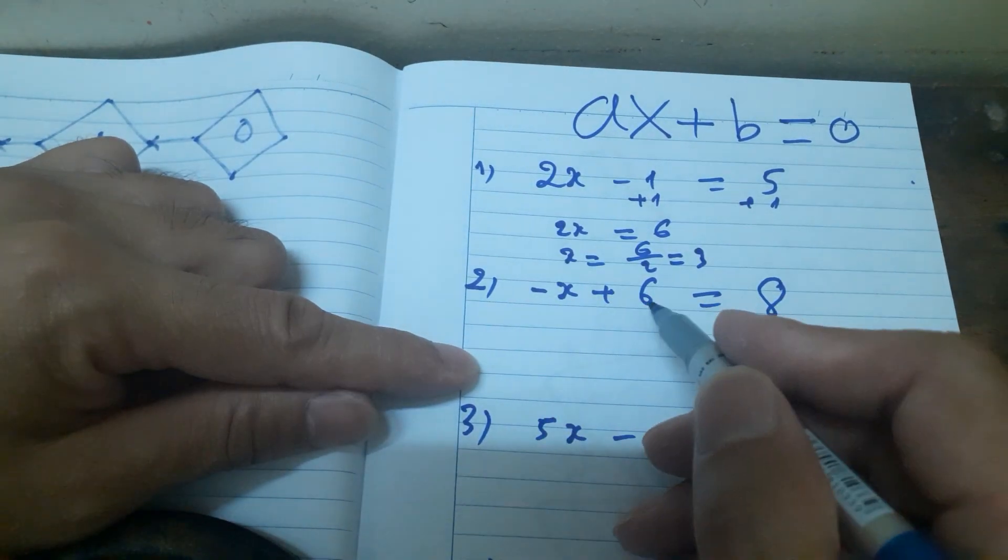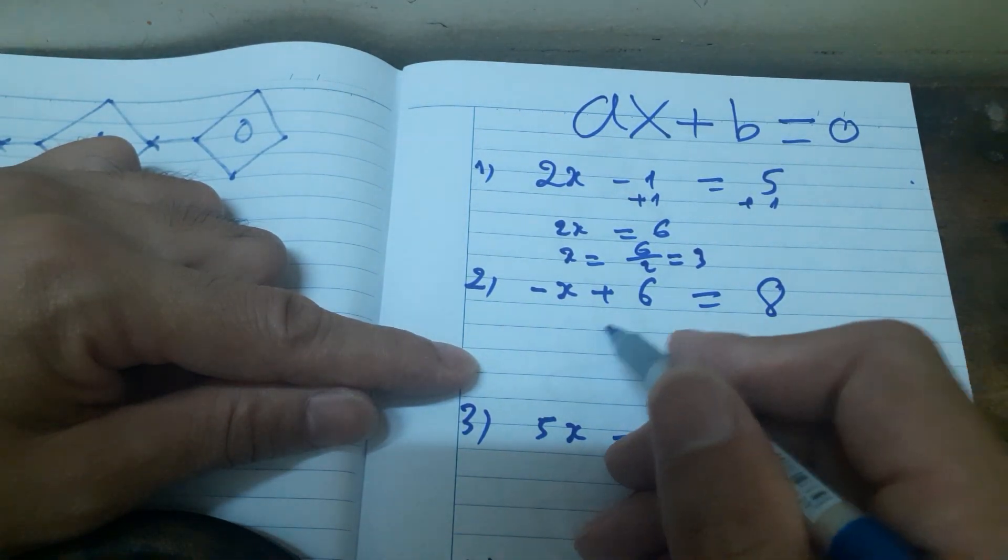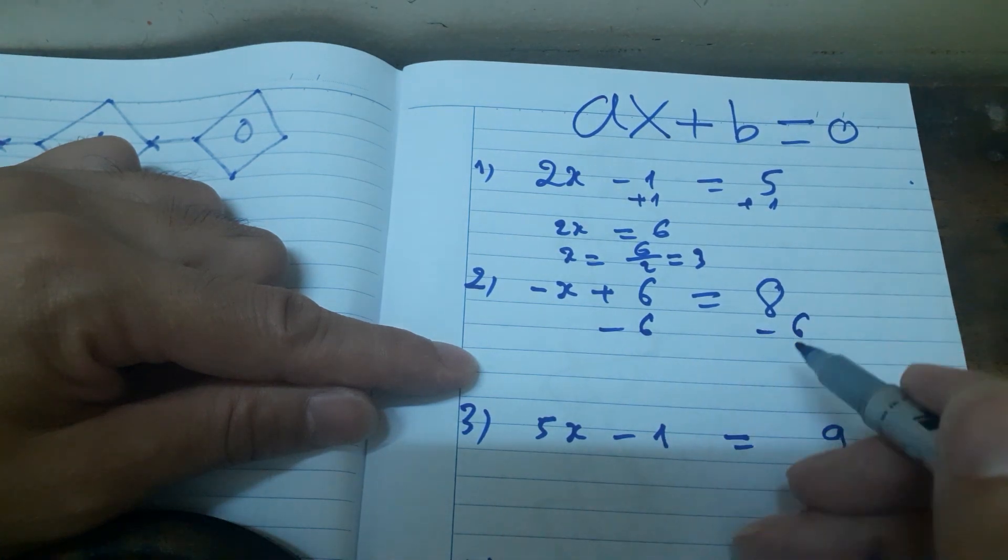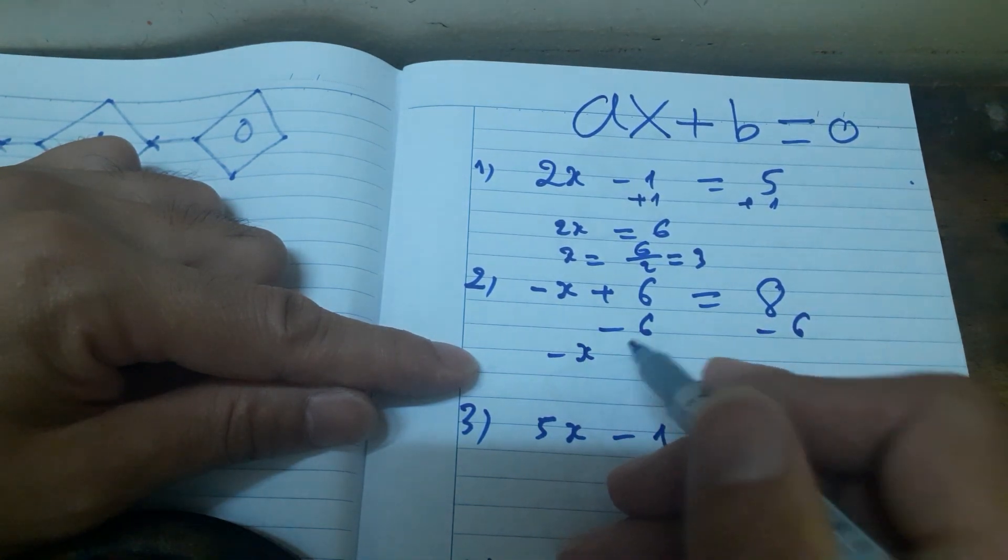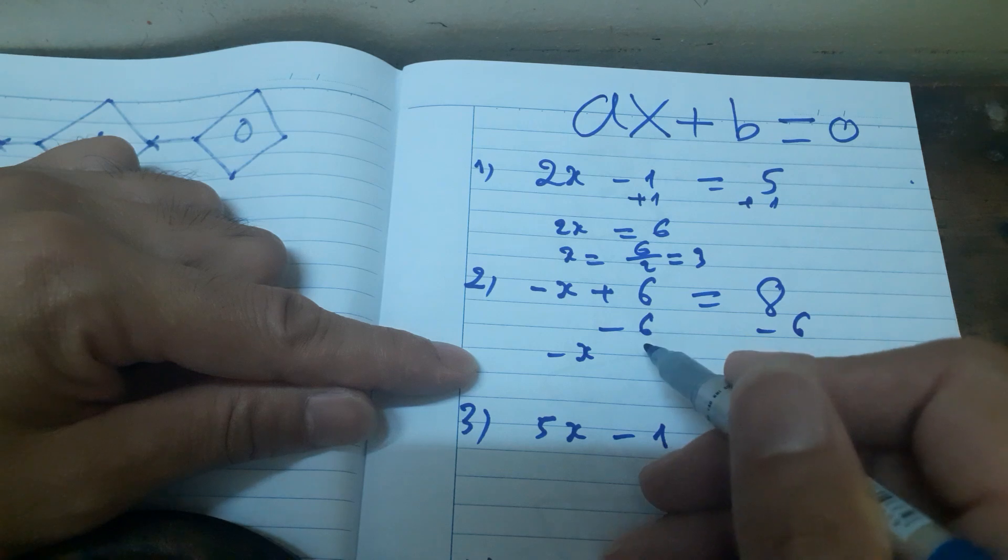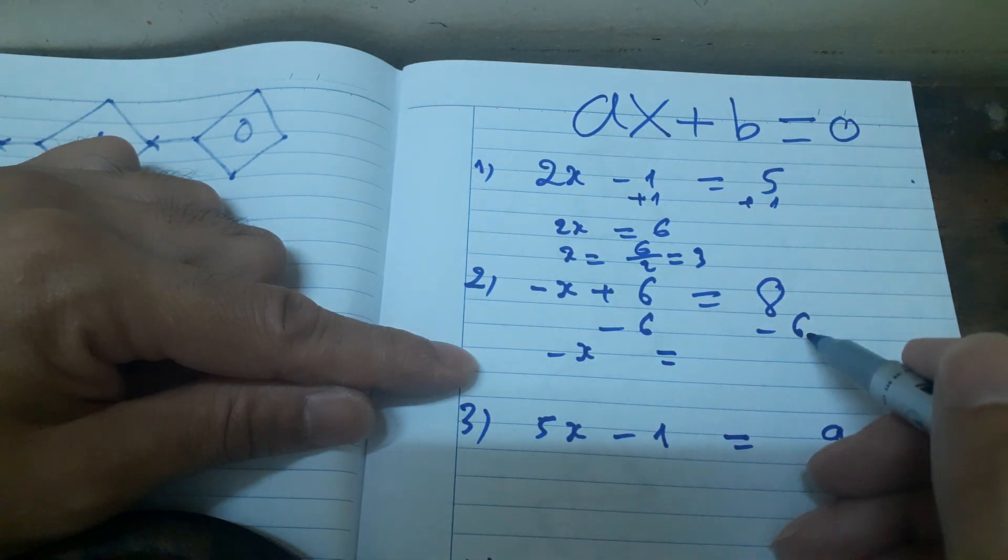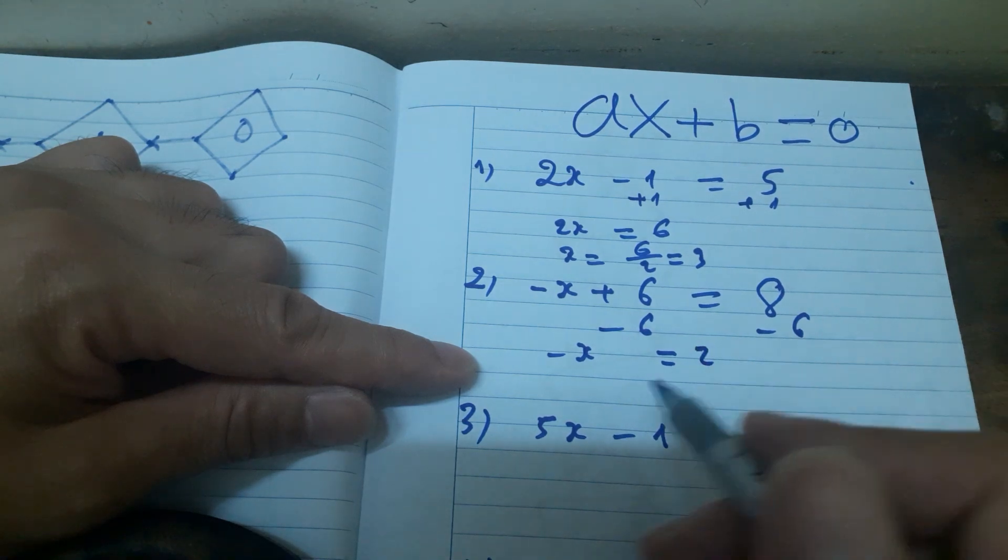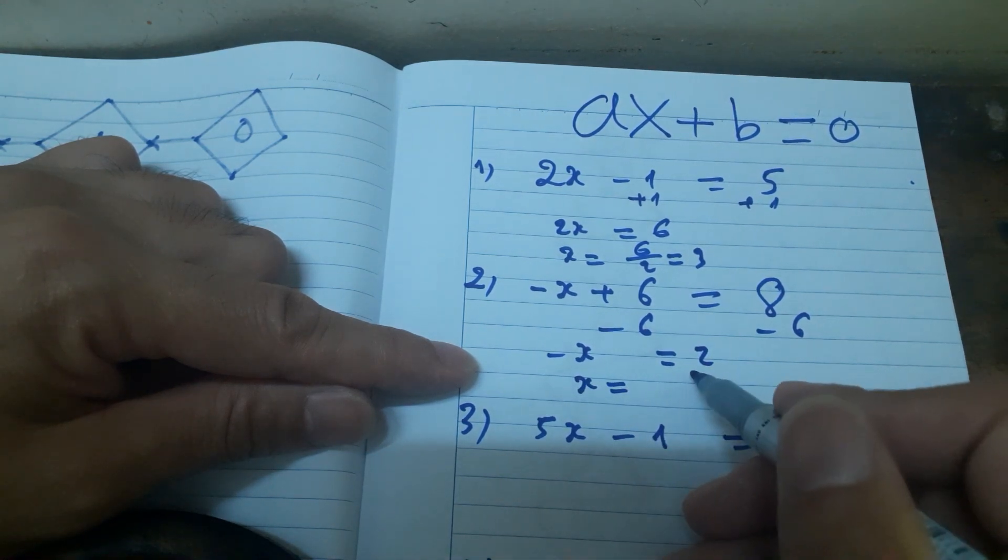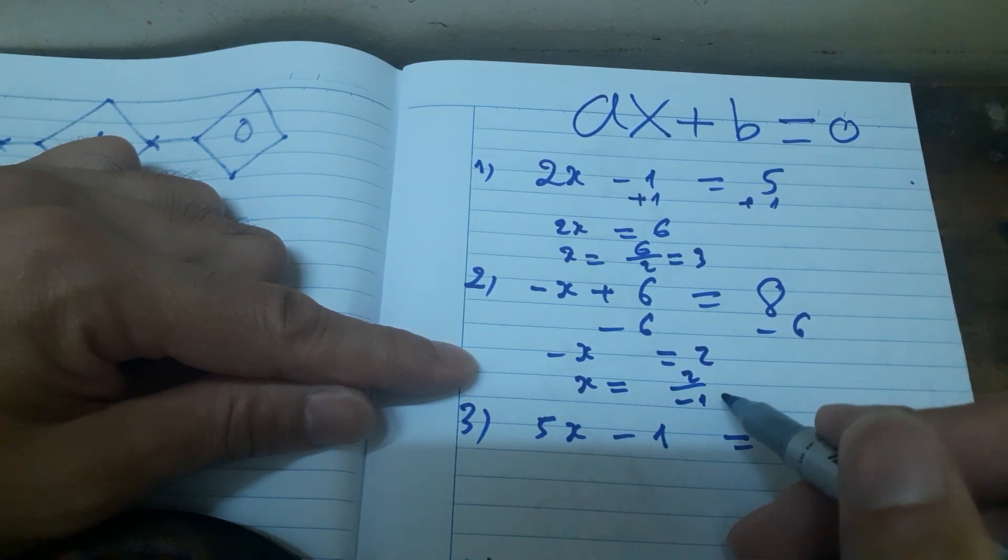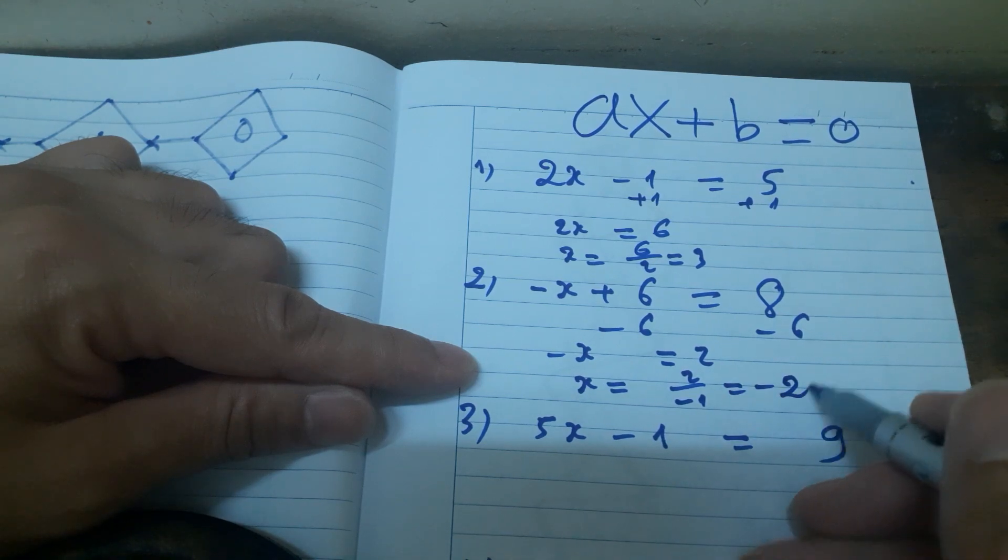Example 2: -x + 6 = 8. Move the 6: minus 6, minus 6. -x plus 6 minus 6 equals zero. 8 minus 6 equals 2. x equals 2 divided by -1 equals negative 2.